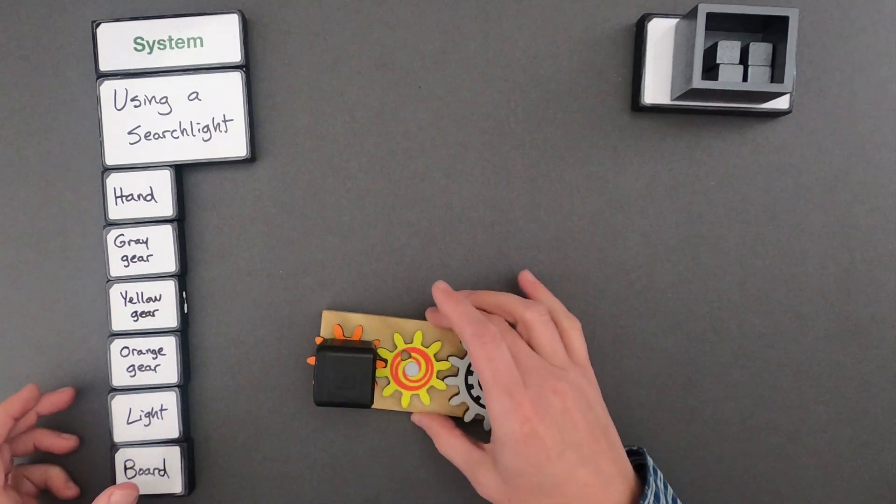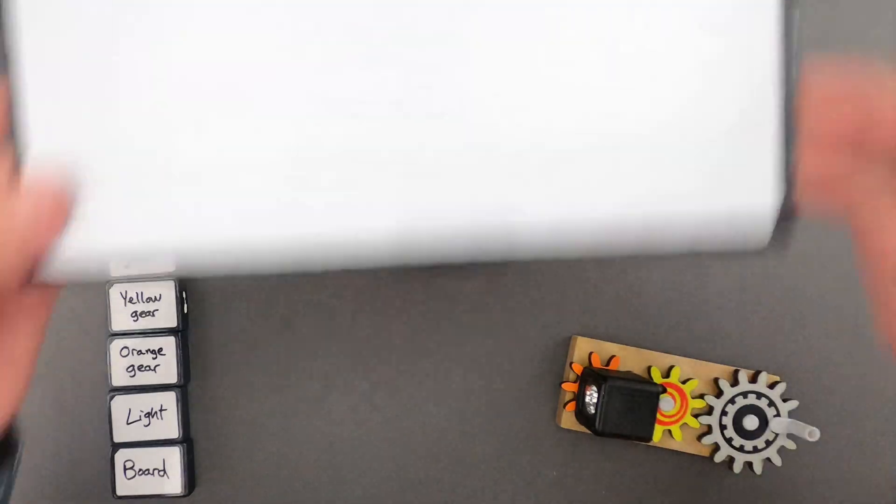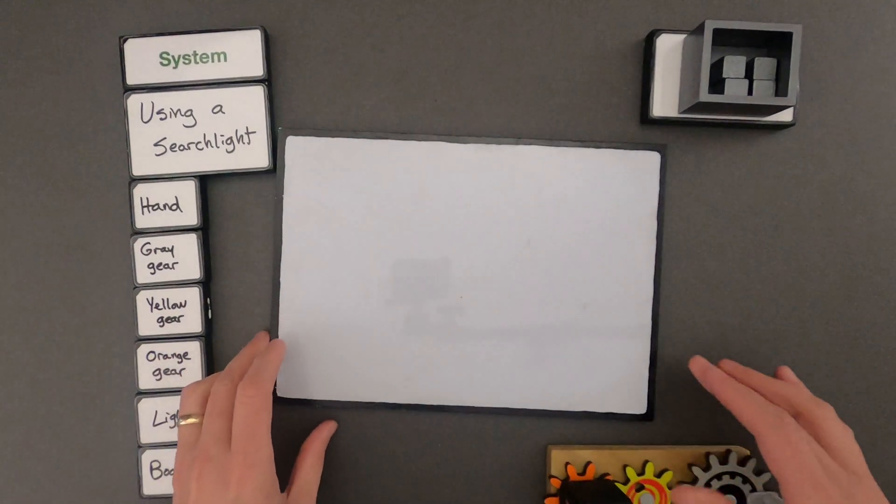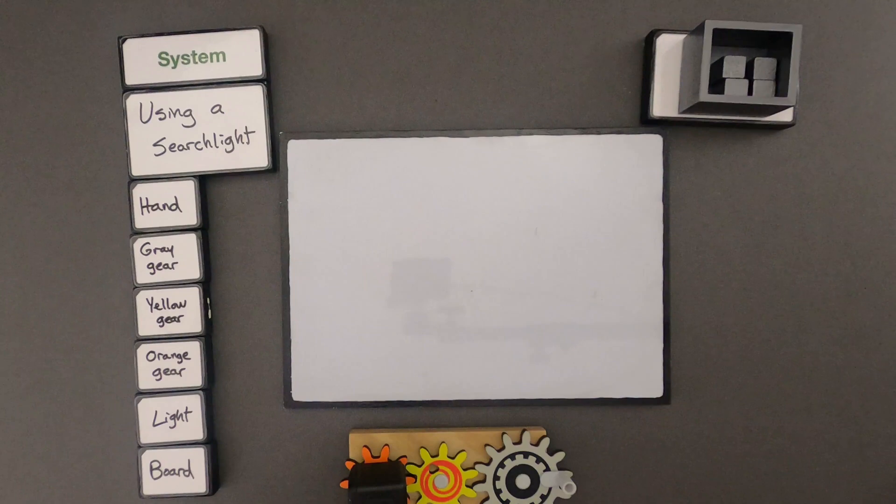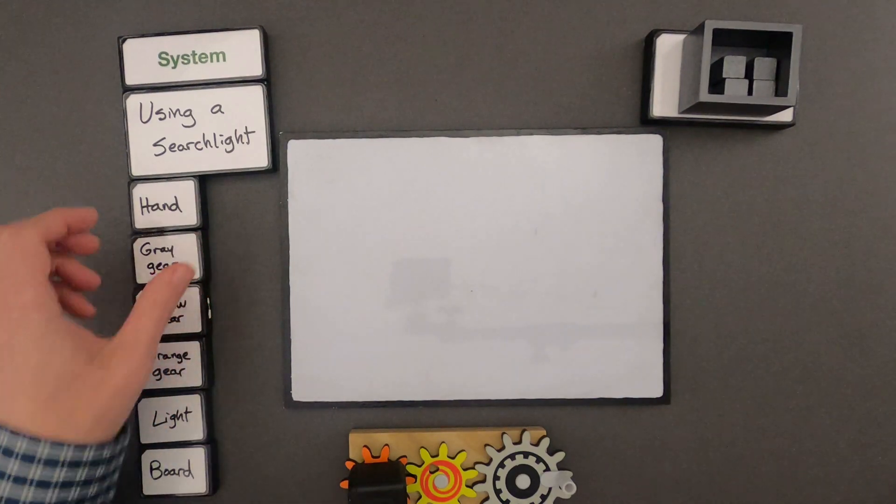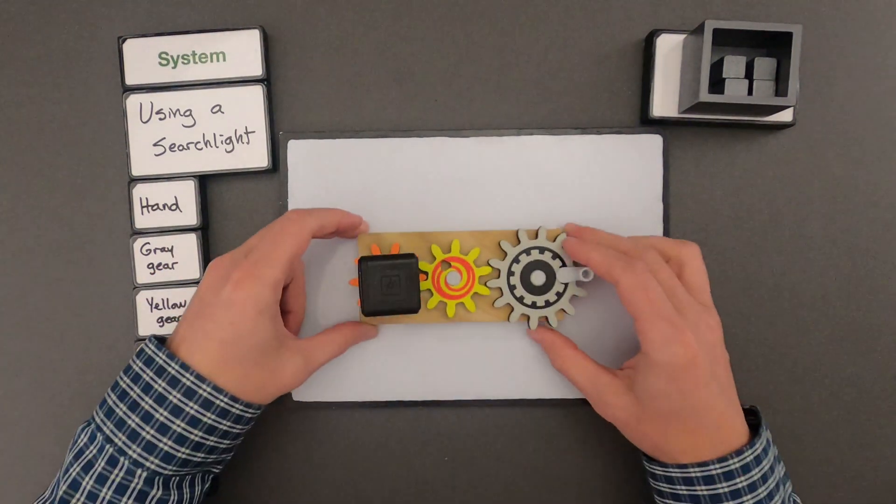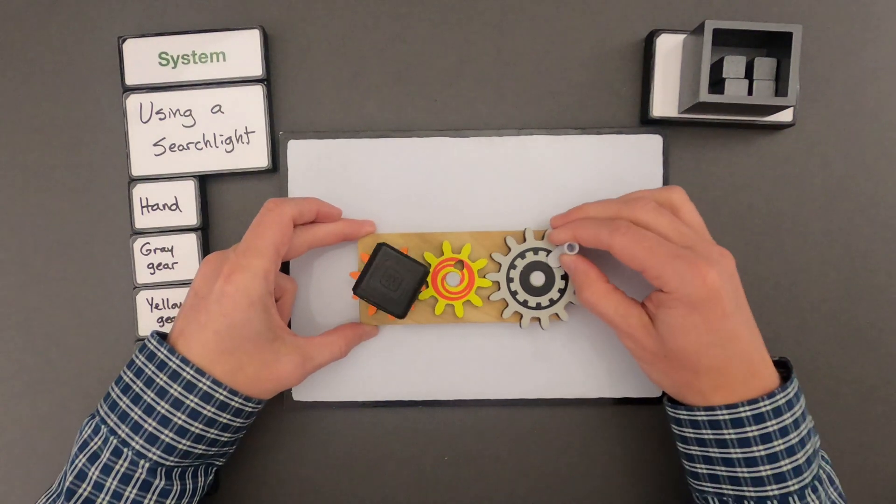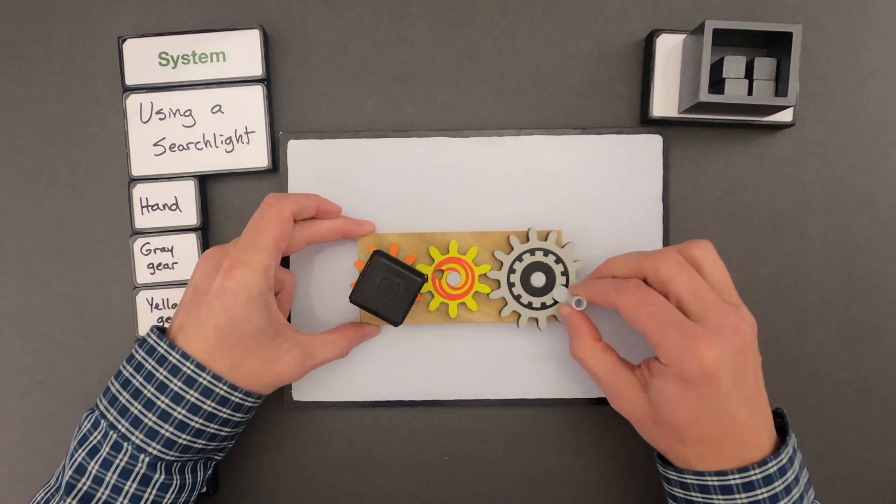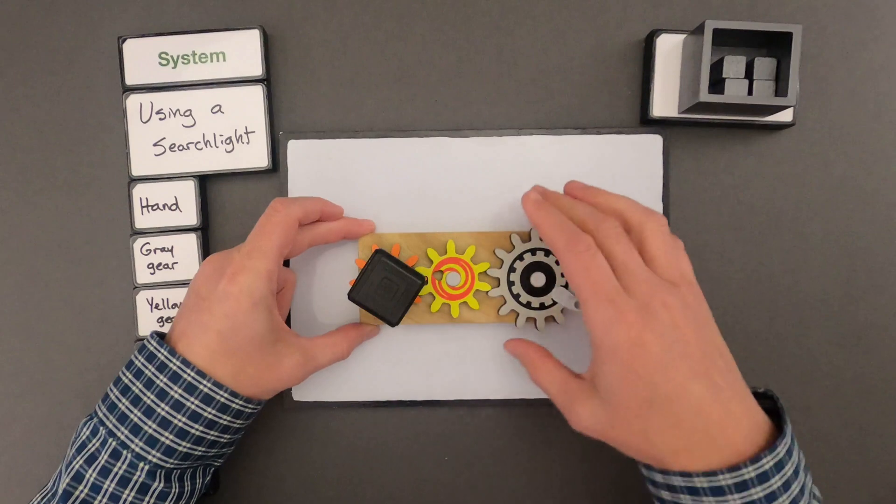Let me write all those out. So these are all the components of the system, from the hand, from the gears, to the light, to the board. And so now what I want to do is bring back that whiteboard, and we're going to start analyzing the interactions between the components in the searchlight. So I'm going to work my way across the searchlight from the right side over to the left side.